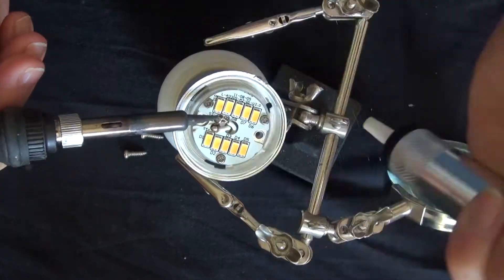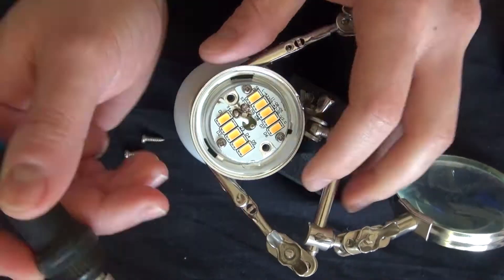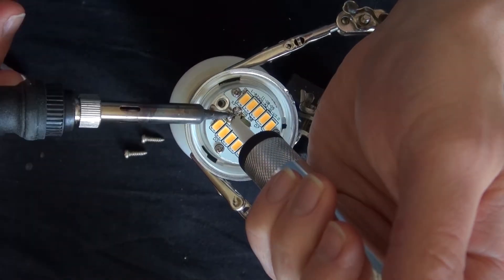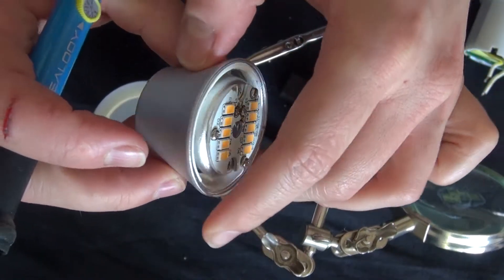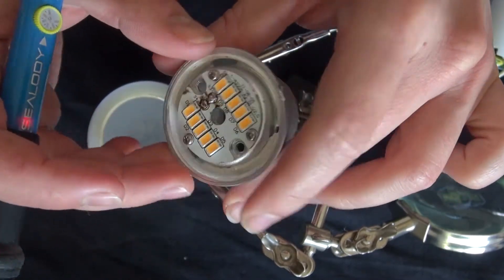Start off with desoldering these wires and this part here is the part that you're going to need for the flashlight.